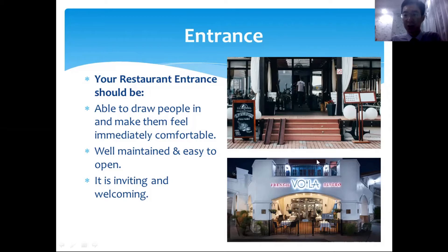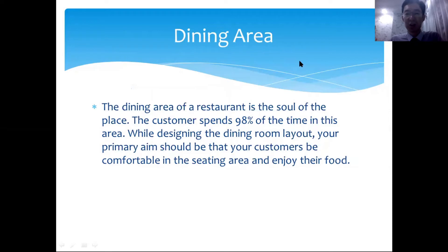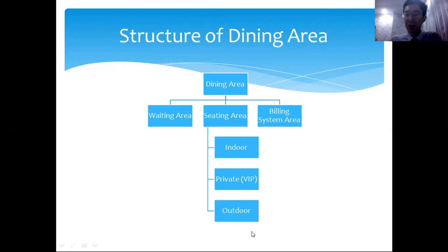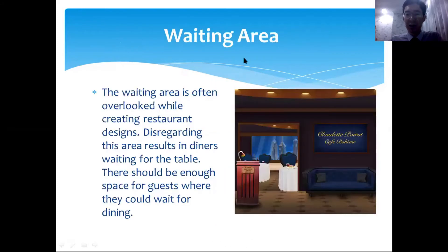The next arrangement is the dining area, which is the most important part of the restaurant. Guests spend 98% of their time here, with the remaining 2% in the entrance and restroom. The dining area consists of several sub-spaces: a waiting area for new guests, a seating area, and a billing area where guests can pay via terminals or other tools. Seating can be indoor, private for VIP guests, or outdoor.